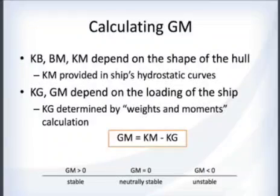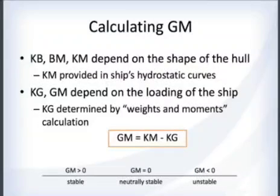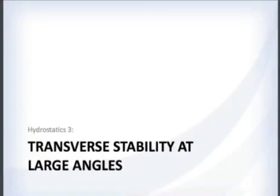If GM is greater than zero, the ship is stable — you have a positive righting moment. If GM equals zero, the ship is neutrally stable and will simply stay at whatever angle it is tipped to. If GM is negative, the ship is unstable and will continue rotating in the direction it was heeled.